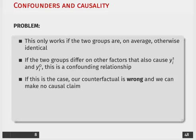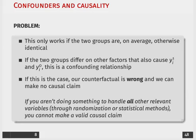In this scenario, our counterfactual is going to be wrong, and we can't necessarily make a causal claim about the efficacy of this medication. If you aren't doing something to handle all of these relevant confounders — either through randomization, which would potentially minimize the likelihood that someone cannot take medication, or some other statistical methods we'll talk about later in the course — then you should really avoid making a causal claim because it likely may not be valid.